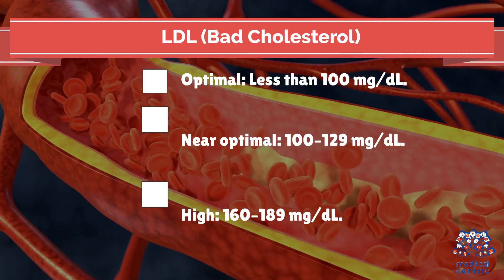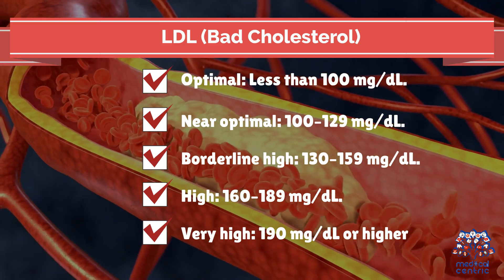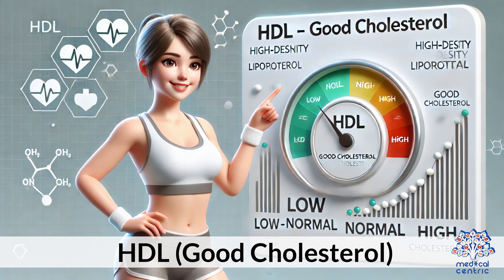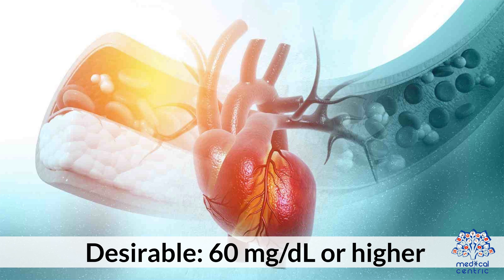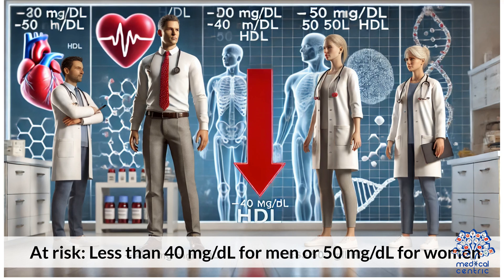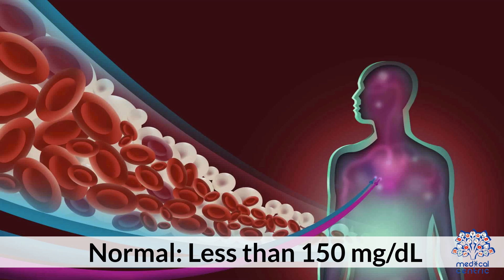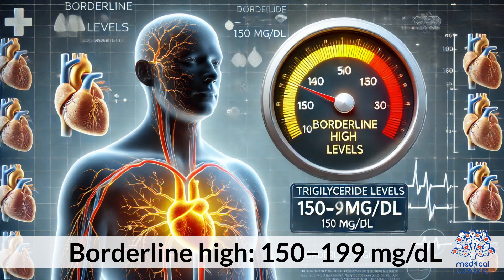LDL levels for adults: optimal is less than 100 mg/dL, near-optimal is 100 to 129 mg/dL, borderline high is 130 to 159 mg/dL, high is 160 to 189 mg/dL, and very high is 190 mg/dL or higher. HDL: desirable is 60 mg/dL or higher; at risk is less than 40 mg/dL for men or less than 50 mg/dL for women. Triglycerides: normal is less than 150 mg/dL, borderline high is 150 to 199 mg/dL.